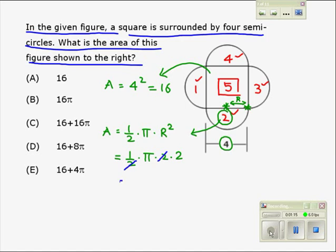But there are four such semicircles. So this entire area is four times two pi equaling eight pi.